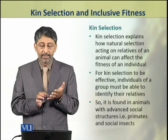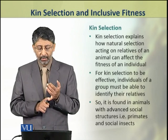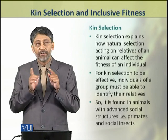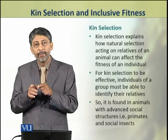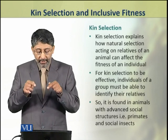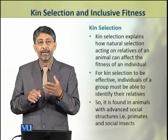For kin selection to be effective, individuals of a group must be able to recognize or identify their relatives. Kin selection therefore only occurs in animals or animal groups where such recognition is possible.